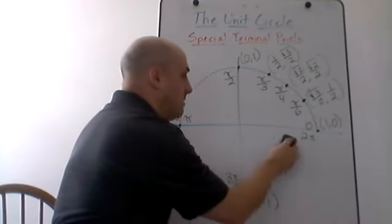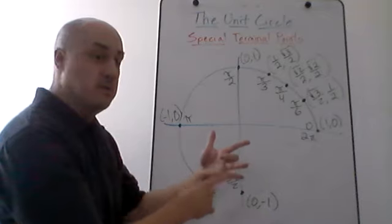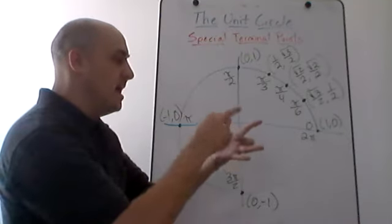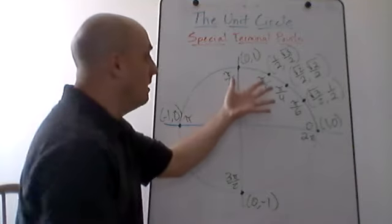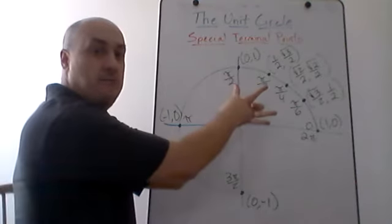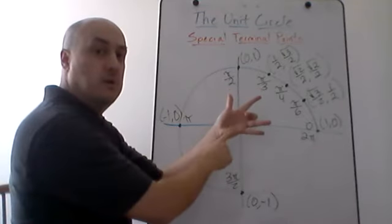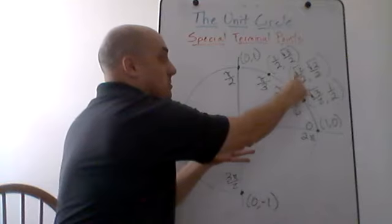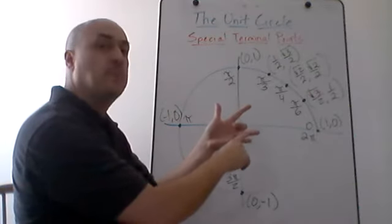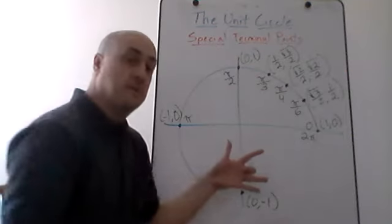For pi over 4, that's the middle finger. Put that down: 2 fingers above gives x = √2/2, and 2 fingers below gives y = √2/2. For pi over 3, that's the index finger. Above is 1 finger, so x = √1/2 = 1/2. Below are 3 fingers, so y = √3/2.